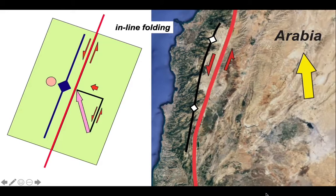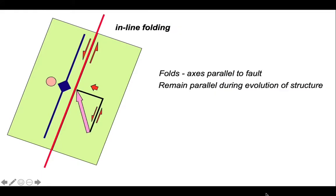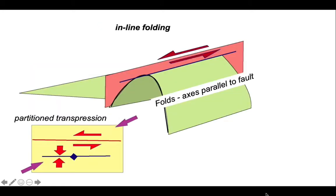So we're dealing with this type of deformation: inline folding. In this model, the fold axes remain parallel to the fault during the evolution of the structure.